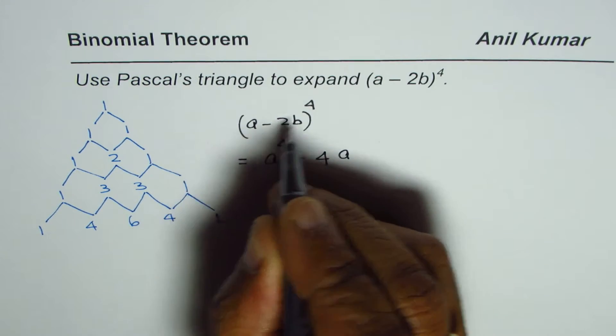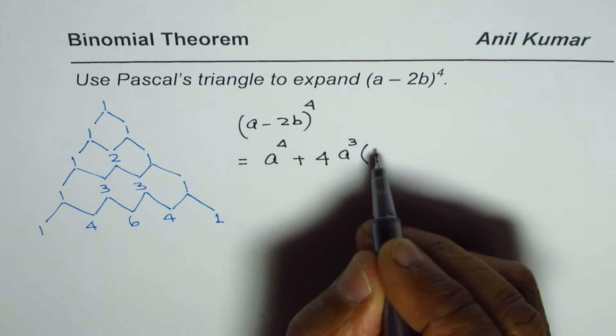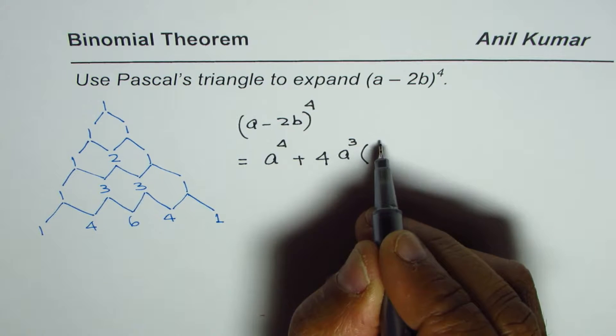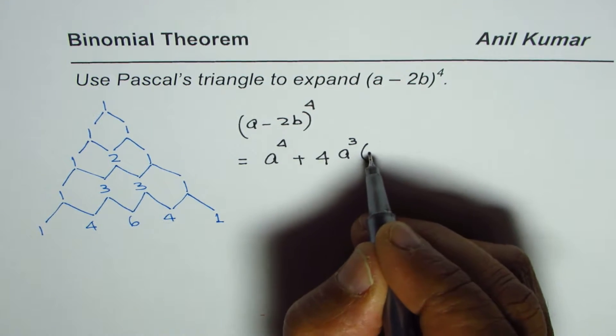when you add them up it should always be 4. The term is minus 2b, so I'll write (−2b) here. Plus 6a^2 — we are decreasing the power of a by 1 each